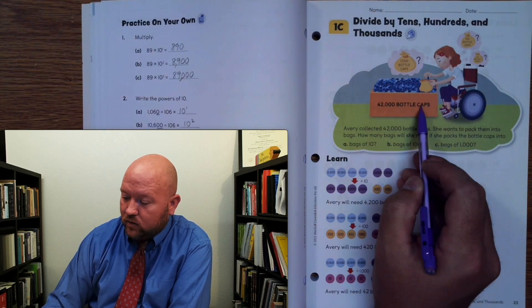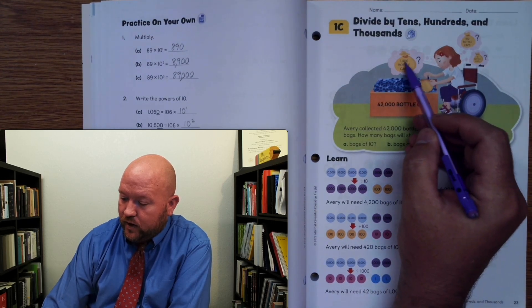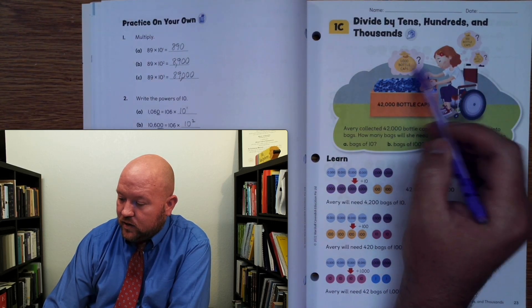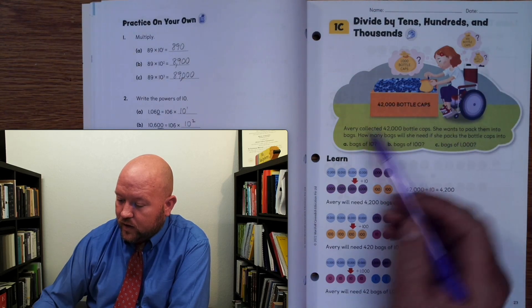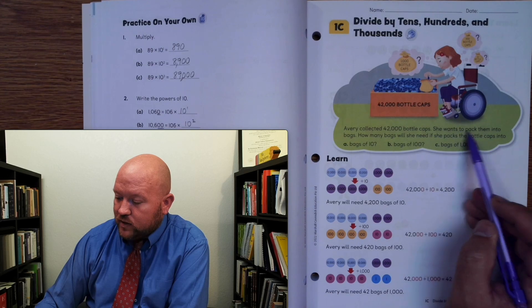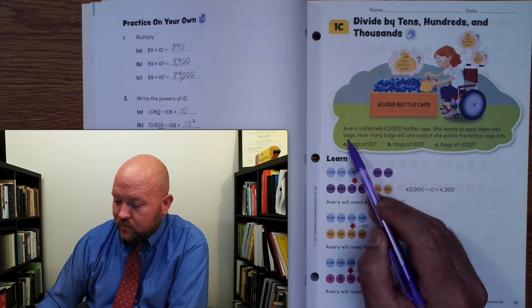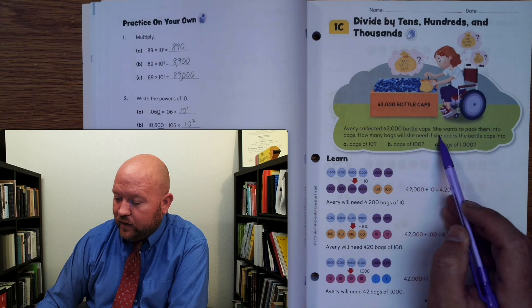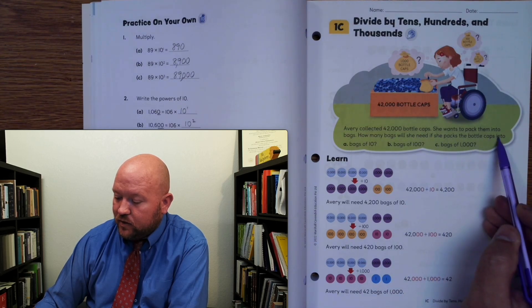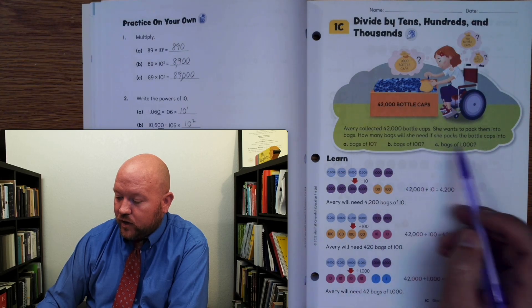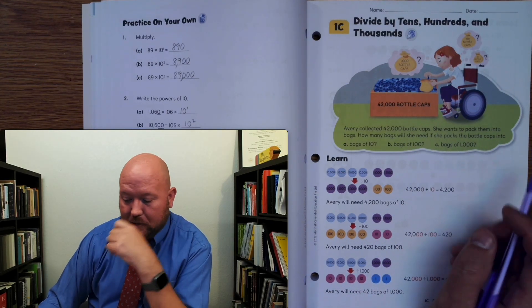So here we have 42,000 bottle caps — 10,000 bottle caps in a bag. Avery collects 42,000 bottle caps. She wants to pack them into bags. How many bags will she need if she packs the bottle caps into bags of 10, bags of 100, and bags of 1,000?